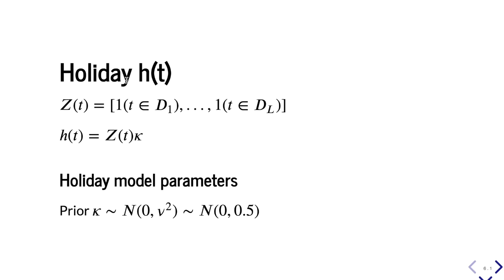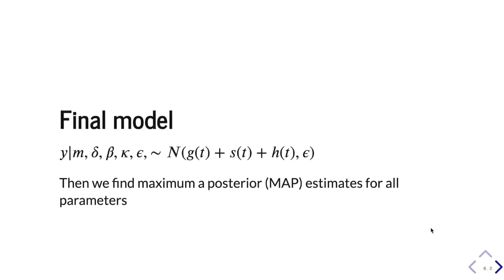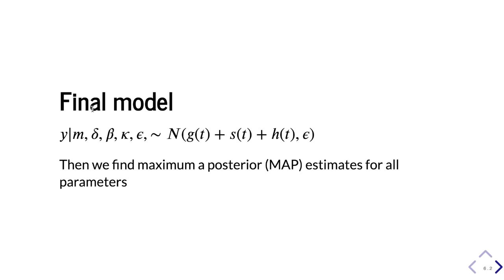The third component of the model is the holiday effect H(t). It models the linear effect of holidays, which is a vector of dummy variables — one indicating a holiday and zero for non-holiday. K is the effect of the holiday, which follows a normal distribution with mean zero and some variance. Combining all three models together, we get the final model for our time series analysis. Based on the priors of the parameters and our data, we find the maximum a posteriori estimates for all our parameters. That's basically how the math works.